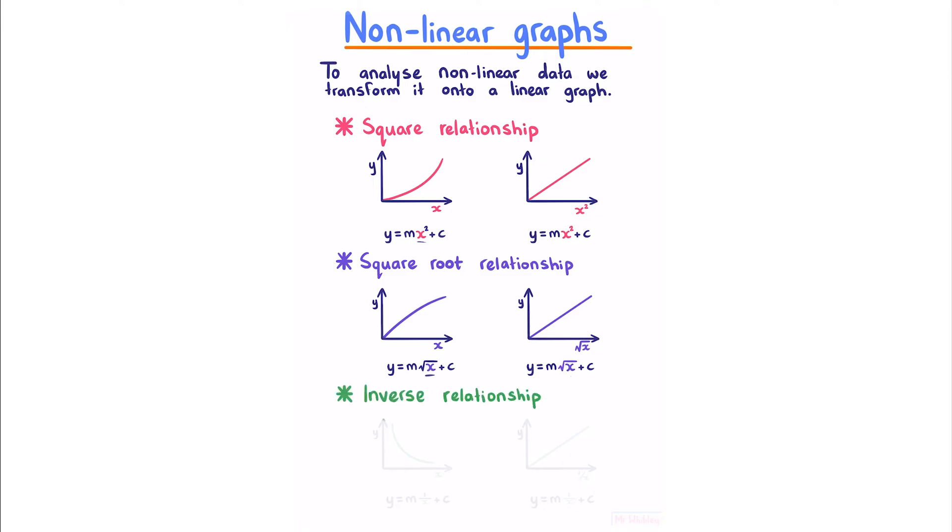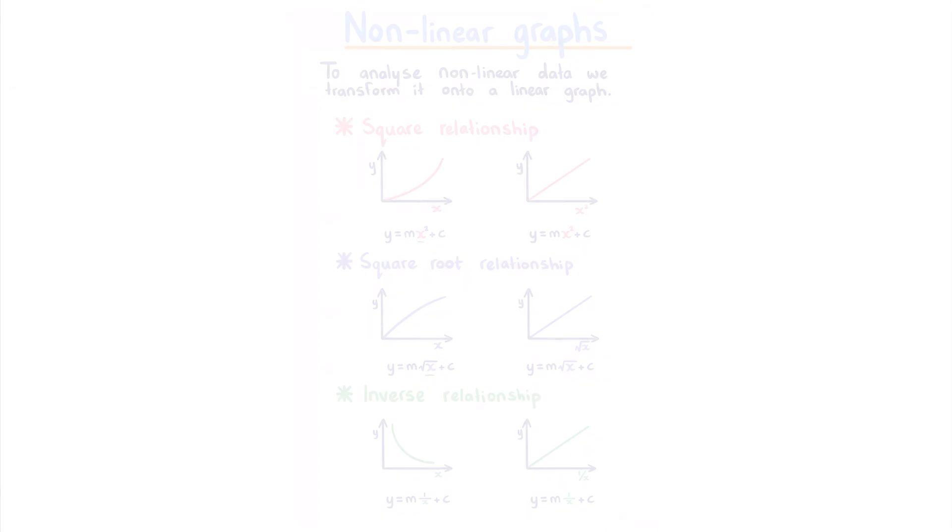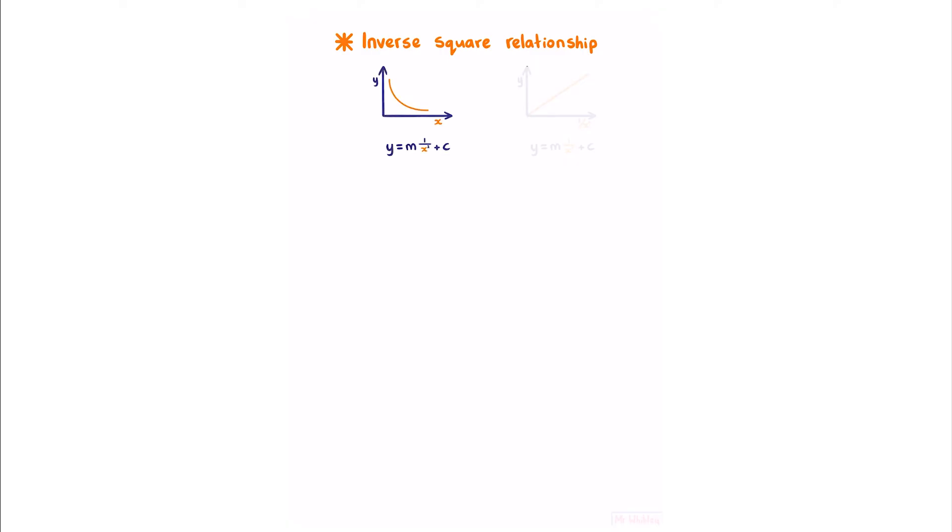An inverse relationship has this curve here, written in the form of y equals m times 1 over x plus c. To make this linear, we plot 1 over x instead of x. And for an inverse square relationship, which is similar to an inverse relationship, but with a steeper decline, we plot 1 over x squared.